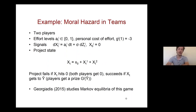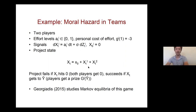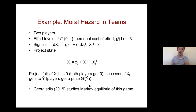The first example is moral hazard in teams: two players work on a project and at each moment each player chooses either no effort or effort to contribute. There is a cost of effort. Players observe, imperfectly with noise, how much each player contributes. The project state is the sum of contributions. If the project state hits zero, the project fails; if it hits an upper value, it succeeds and players receive a prize. The question is how much cooperation players can sustain, and a limited time horizon can limit the scope of cooperation.